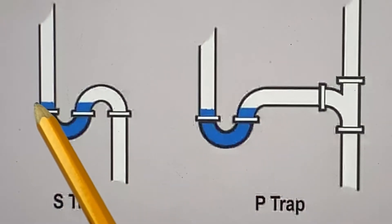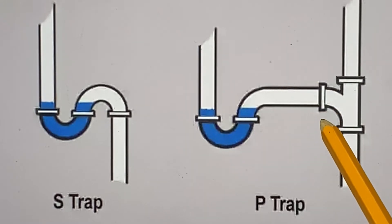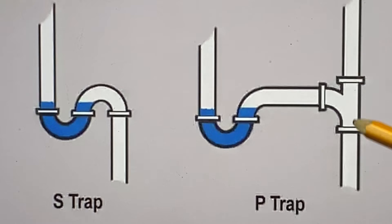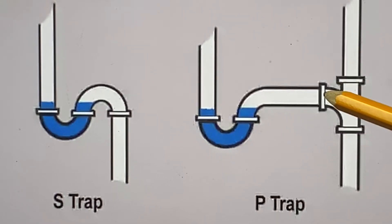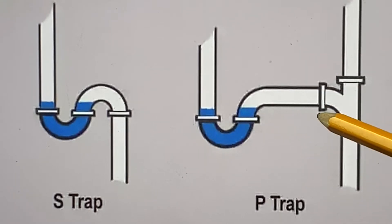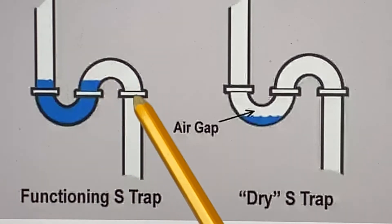P-traps replaced S-traps to eliminate the siphoning issue. What makes a P-trap better? For one, a P-trap configuration involves a vented pipe which is usually inside the wall and extends to the roof, releasing any fumes or gases to the outside air. This greatly reduces the suction action from gravity pulling water down out of the trap, because the open roof vent balances the air pressure. You don't have that with an S-trap.